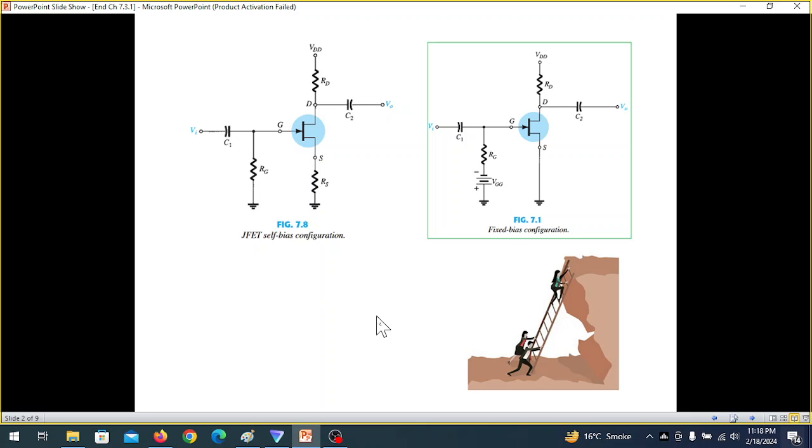But in case of a self-biased circuit we do not provide any battery. It is self-help and the self-help is coming from here. The voltage drop across RS will provide the biasing.